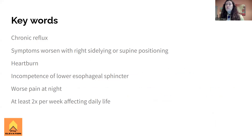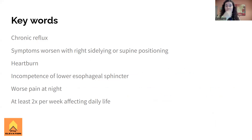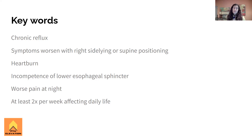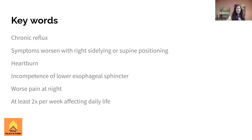Key words to think about with GERD: chronic reflux occurring two or more times per week, sour taste in the mouth, heartburn. Symptoms worsen at night, in right sidelying, and in supine. We want to avoid those positions entirely. Left sidelying is okay, semi-Fowler's is okay. The pathology is an incompetent lower esophageal sphincter — not upper, lower. It's affecting daily life and causing serious problems.